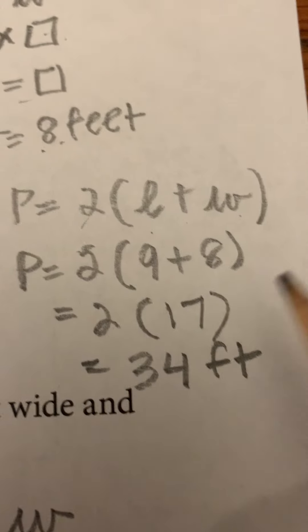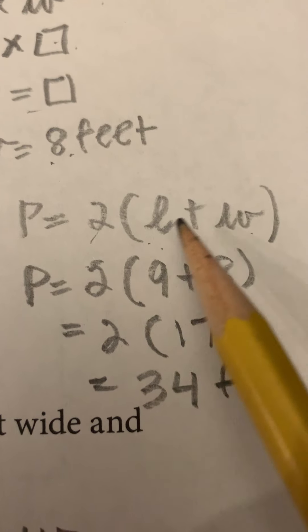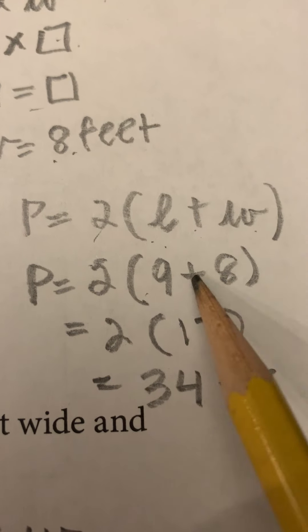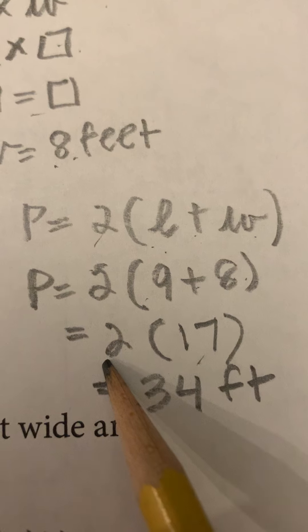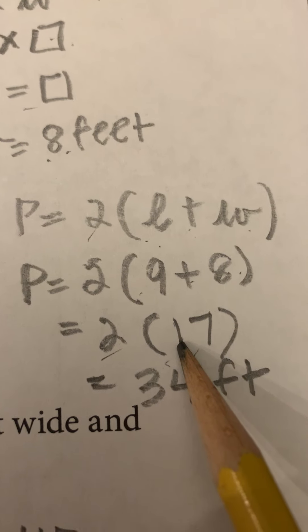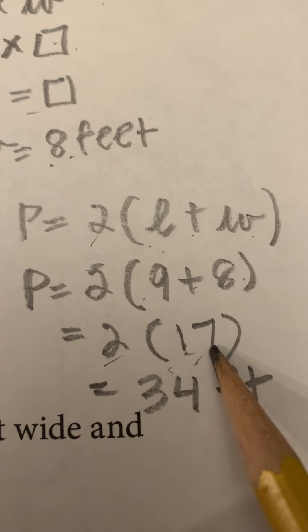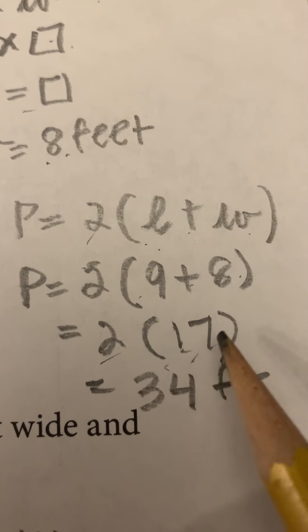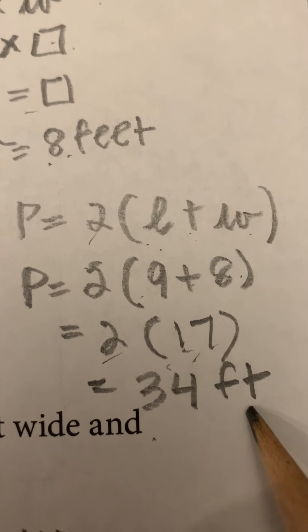Perimeter is two times length plus width. So nine plus eight gives me 17. I multiply that by two. Double tens is 20. Double seven is 14. 20 and 14 is 34 feet. And that's my answer.